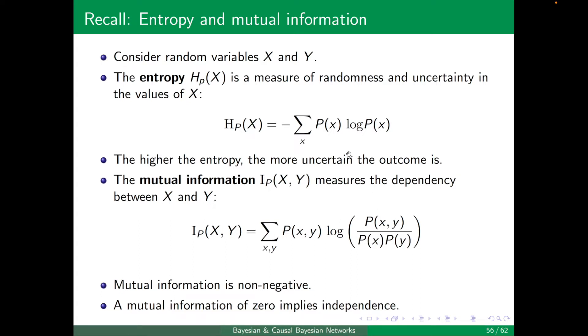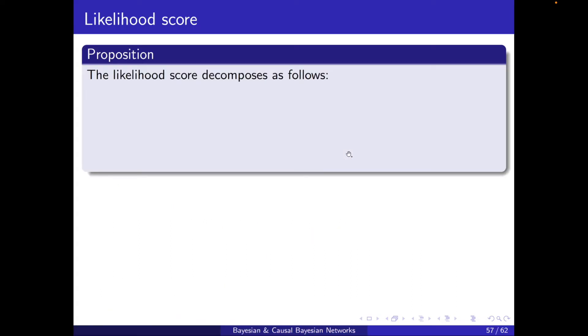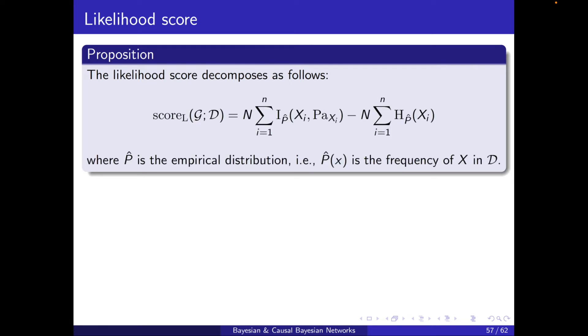Okay, so entropy, mutual information. Here we have our proposition. The likelihood score decomposes as follows. Here I have the mutual information of each of the variables and its parents, the summation of all of them, and here minus the summation of all of the entropies. The whole thing is also multiplied by n. Just note that here I have p hat. That is the empirical distribution. p hat of x is the frequency of x in the table.